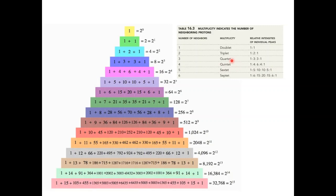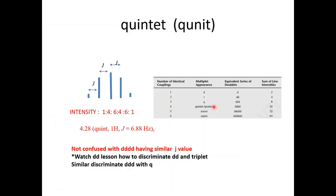Don't confuse a quintet with a doublet of doublet of doublet of doublet. The intensities: doublet is 1:1; triplet is 1:2:1; quartet is 1:3:3:1; quintet is 1:4:6:4:1 according to the Pascal triangle. This quintet signal can also appear in the case of doublet of doublet of doublet of doublet.